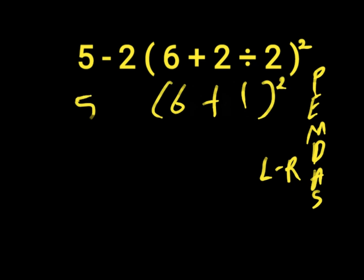Then 5 minus 2. So, solving our parenthesis, 6 plus 1 will give us 7. We'll have 7 to the exponent. Then we'll have 5 minus 2 times 7 raised to the power of 2.